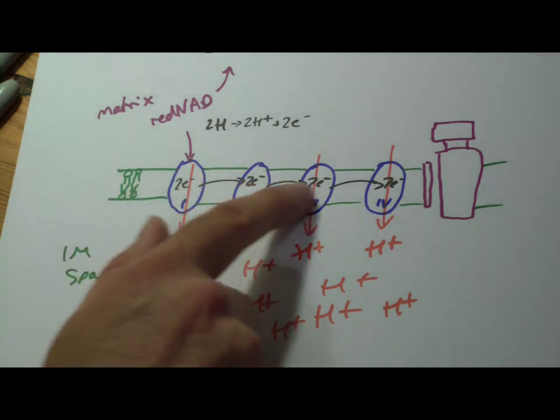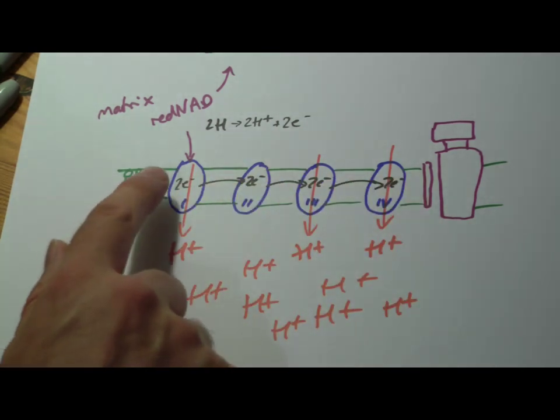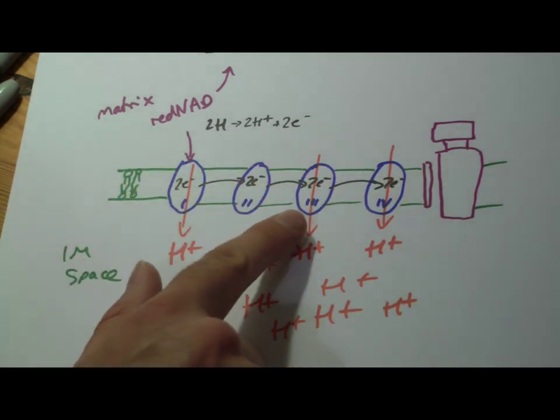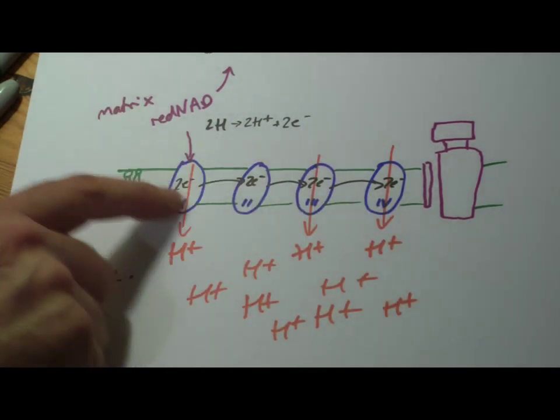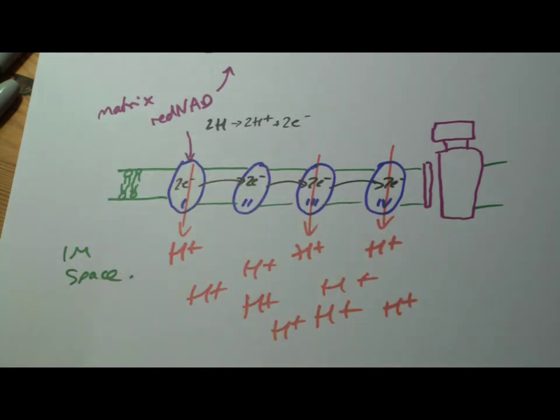How do we pump it through? We use electrons, or the energy from electrons being passed along on complex 1, 3 and 4. Now provided we have a constant supply of reduced NAD coming on, we can pump loads of these things through.